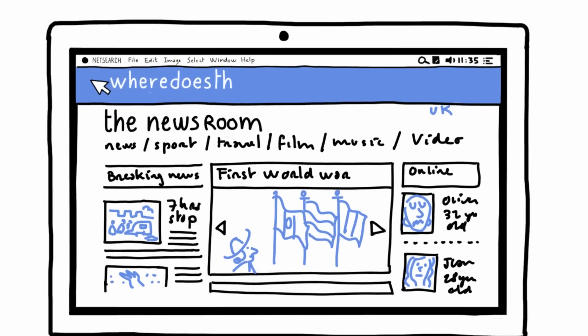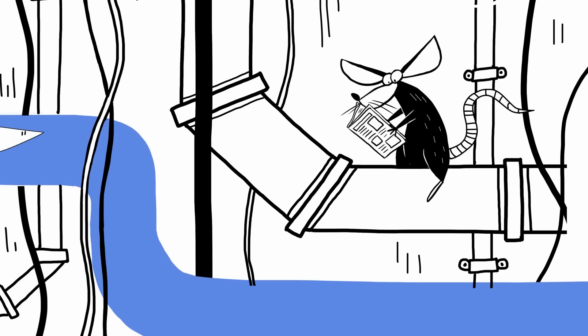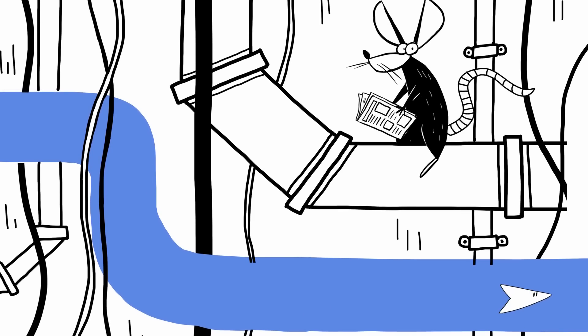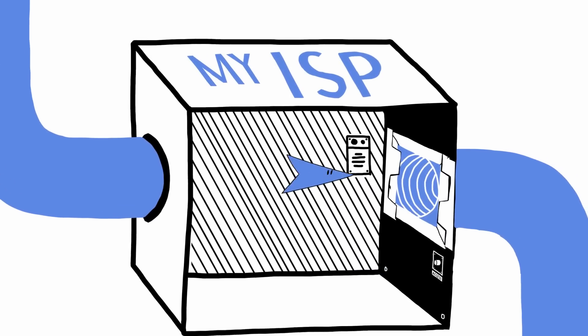By entering the address of the website you want to visit, you send an electronic request for information over your phone line or cable to your ISP. The ISP sends the request to a server further up the chain, a domain name server or DNS, which acts as a kind of directory.